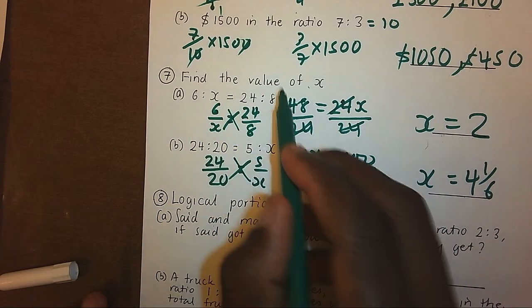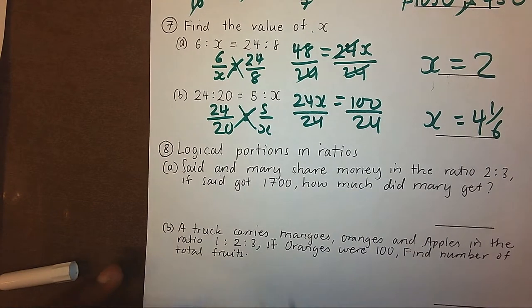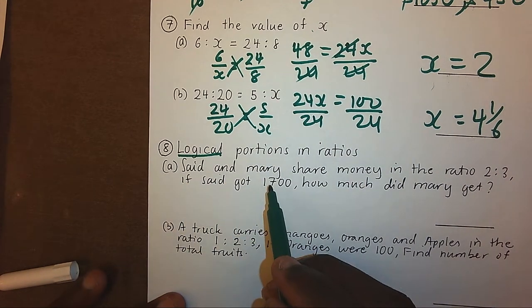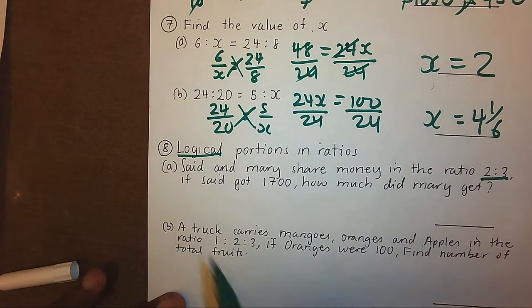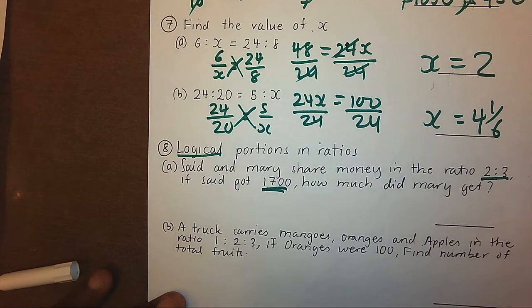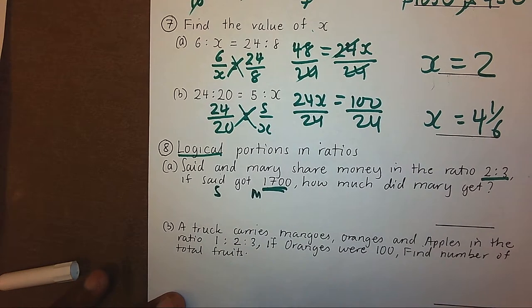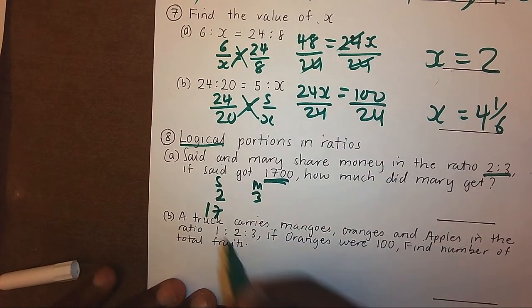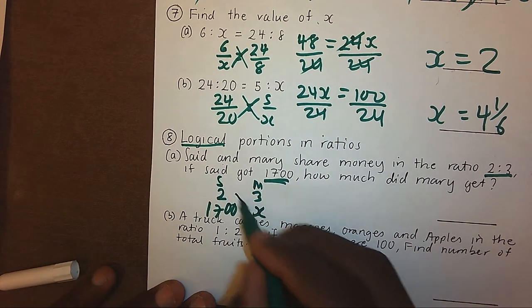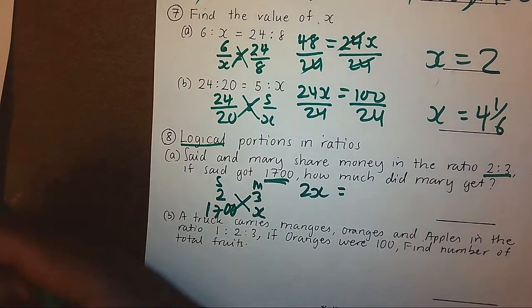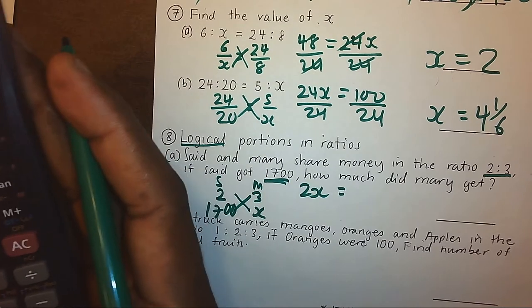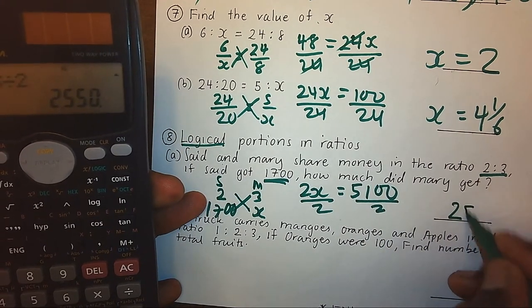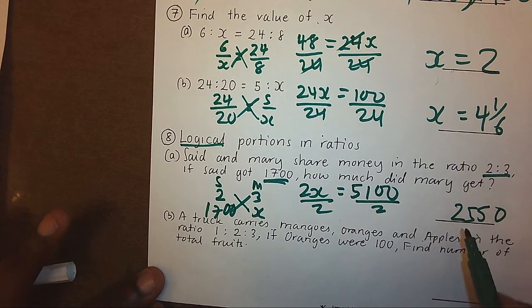Now we look at simple word problems. I can call it a logical, practical meaning of ratios. Sayid and Mary share money in this ratio. If Sayid gets this much, how much did Mary get? Simple. We have Sayid with ratio 2 and Mary with ratio 3. If Sayid gets 1700, then how much does Mary get? We shall cross multiply. 2x equals 1700 times 3, giving me 5100. Divide by 2, I will get 2550. This is the portion for Mary.